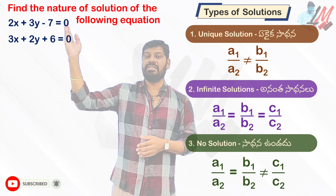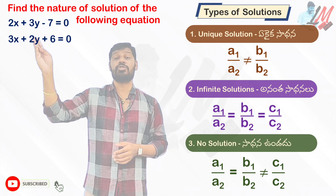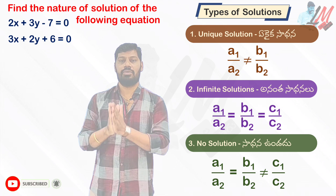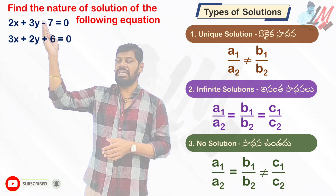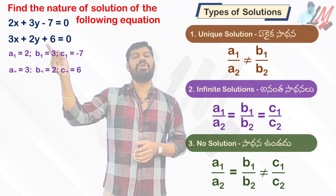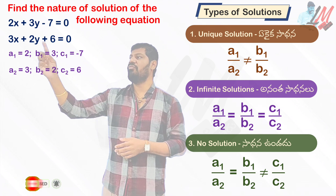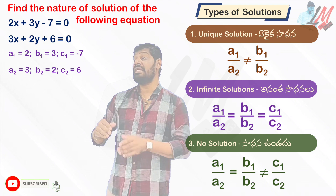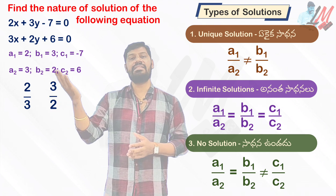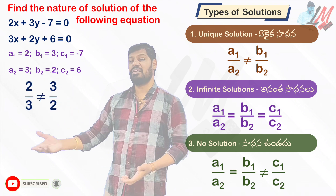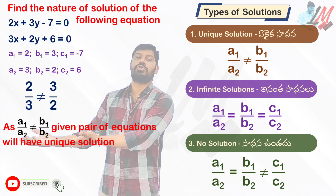Let us see three examples. Find the nature of the solution. Number one: 2x plus 3y minus 7 equal to 0 and 3x plus 2y plus 6 equal to 0. Comparing, a1 equals 2, b1 equals 3, c1 equals minus 7, a2 equals 3, b2 equals 2, c2 equals 6. Since a1 by a2 equals 2 by 3 and b1 by b2 equals 3 by 2, these are not equal, so the given pair of equations has a unique solution.